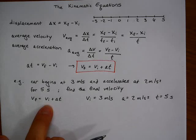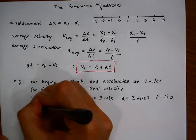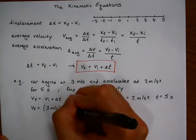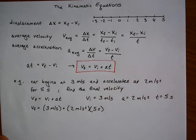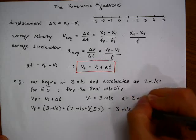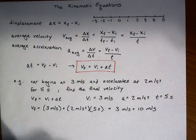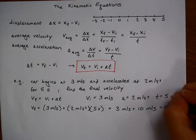The next step is typically to solve the equation for the variable that we wish to have. In this case, the equation is already solved for VF, so there is no need to rewrite it. Now we plug in 3 meters per second plus 2 meters per second squared times 5 seconds. That is equal to 3 meters per second plus 10 meters per second for a total of 13 meters per second.